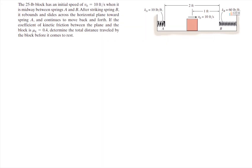We have a 25-pound block that has an initial speed of 10 feet per second when it's midway between springs A and B. After it hits spring B, it rebounds and slides across the horizontal plane towards spring A and continues to move back and forth. The coefficient of kinetic friction between the plane and the block is 0.4, and we want to find the total distance traveled by the block before it comes to rest. So first let's figure out what's going on when we hit spring B, and then we'll figure out how far back it travels after that.